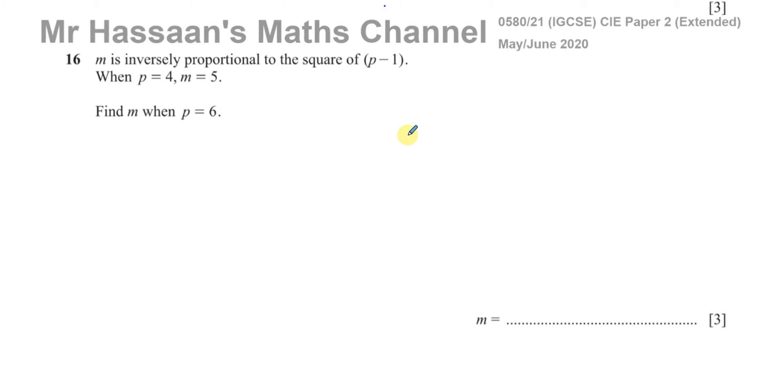It says m is inversely proportional to the square of p minus 1. When p equals 4, m equals 5, find m when p equals 6.